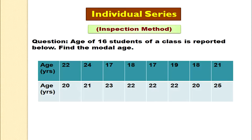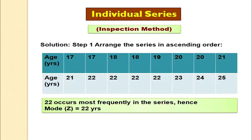In this example, the age of 16 students is given. We arrange the data in ascending order and observe that value 22 has been repeated the most — 4 times, which is the maximum. So the modal age is 22 years.